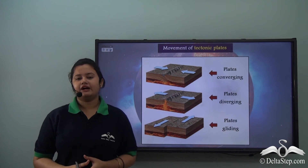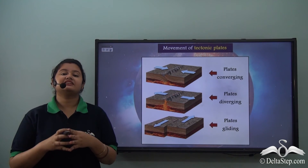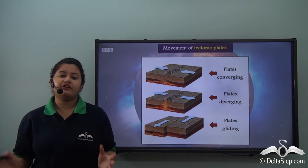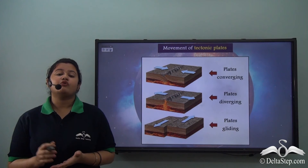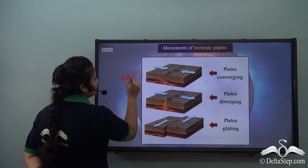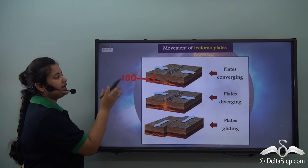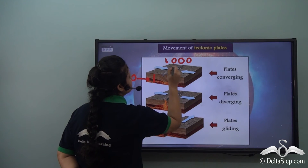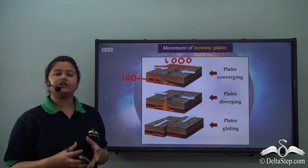Plate tectonics is a theory which states that the Earth's crust or lithosphere is divided into irregular and massive slabs of rocks called plates. These plates vary in thickness and size. These plates may be about a hundred kilometres thick and thousands of kilometres wide.